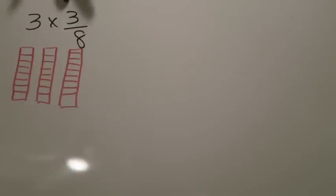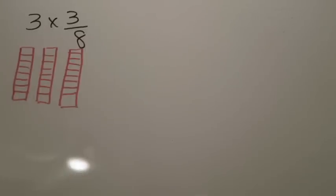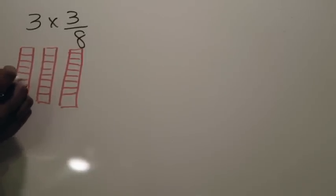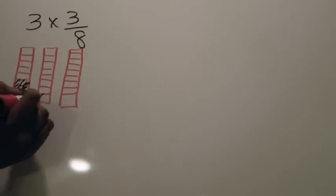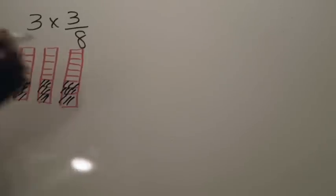Next we look at our numerator. The numerator tells you that now that you've taken your three wholes and separated them into eight equal parts, in each of those wholes you're going to shade three eighths. So in each whole I'm going to shade in three sections — that's three eighths shaded in whole one, three eighths in whole two, and three eighths in whole three.